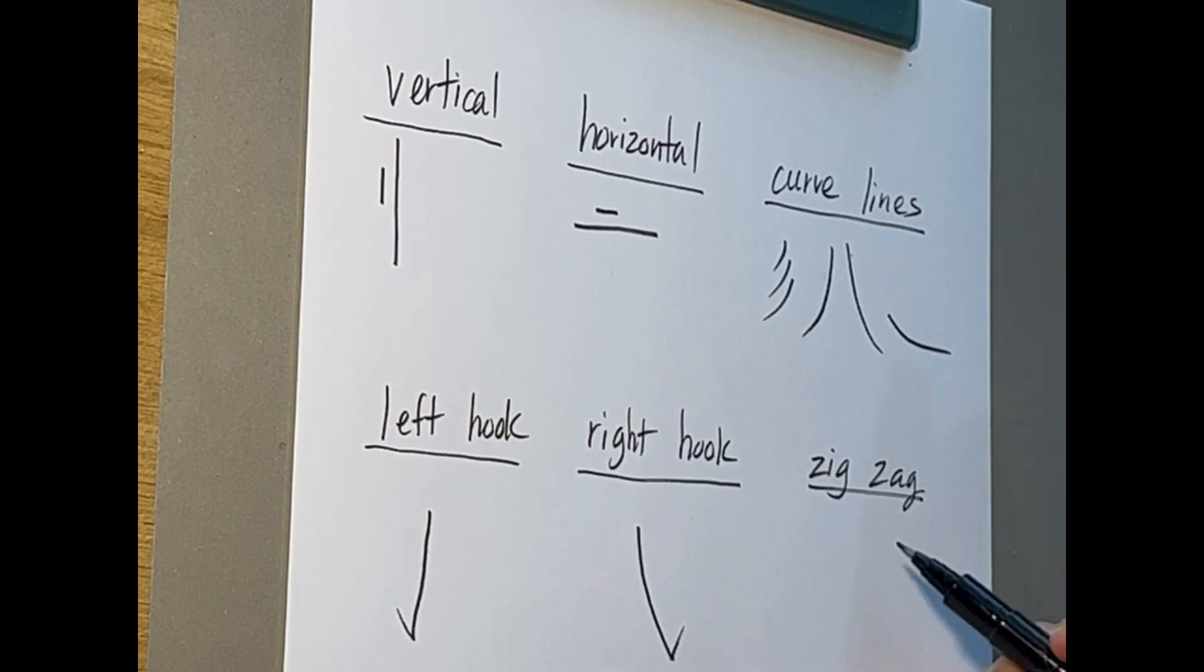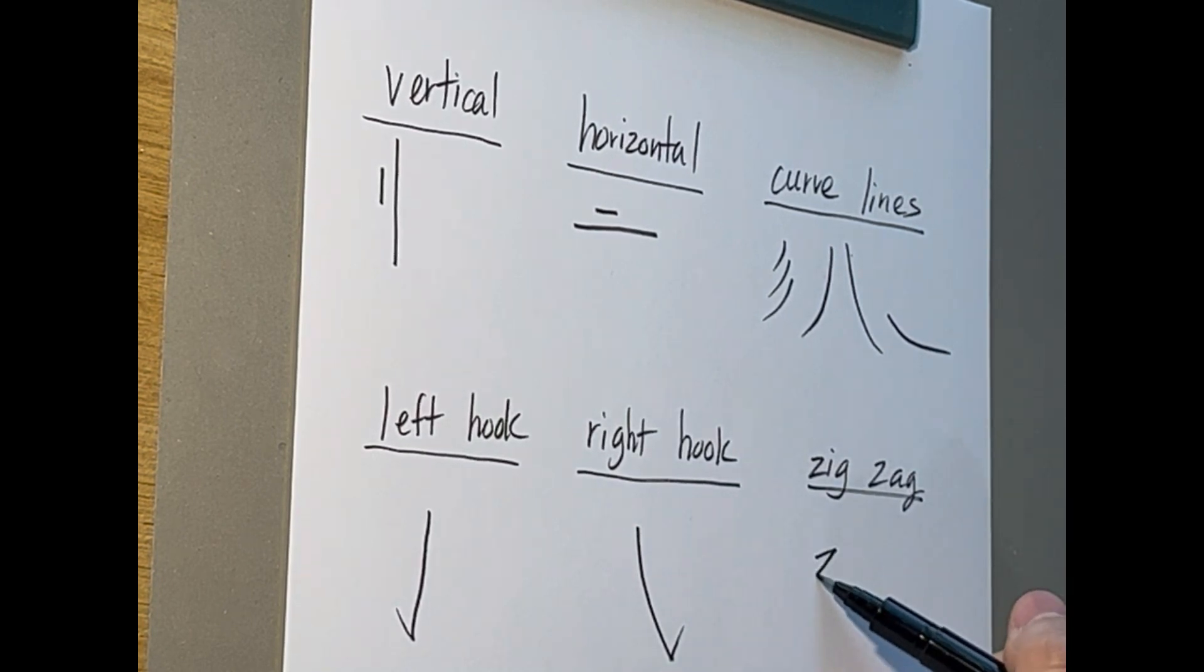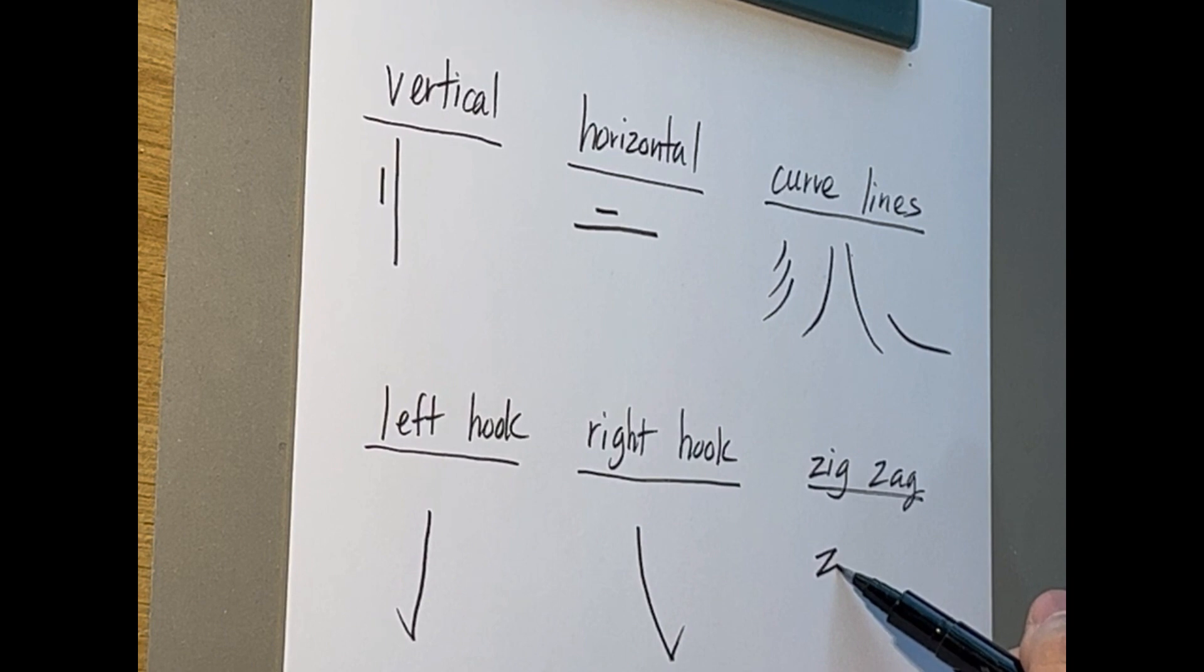A zigzag line can go like this for certain characters, like a Z, but it ends up curving like this, like a little boat.